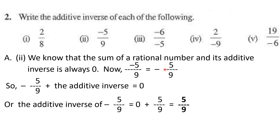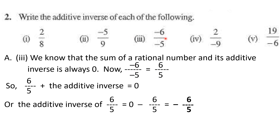I have written the same concept in every part so you can memorize it. The sum of a rational number and its additive inverse is always zero. For minus five by nine — written in standard form as minus five upon nine — we have minus five upon nine plus its additive inverse equals zero, so the additive inverse equals plus five by nine. Therefore five by nine is the additive inverse of minus five by nine.